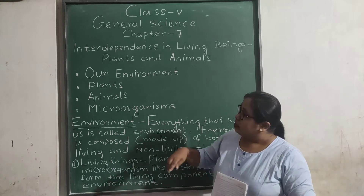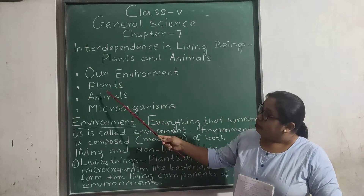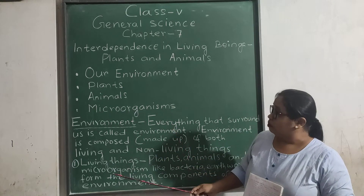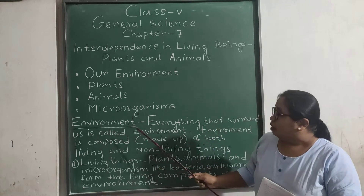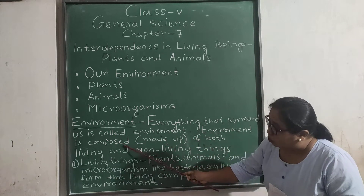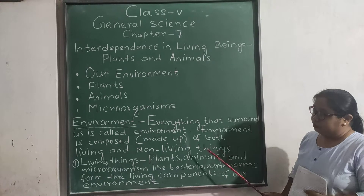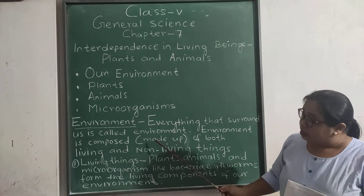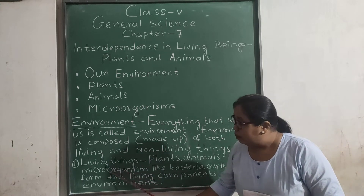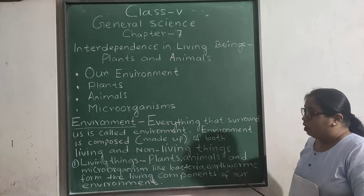First of all, let us discuss about our environment, plants, animals and micro-organisms. What is environment? Everything that surrounds us is called environment. Environment is composed of both living and non-living things. Living things include plants, animals and micro-organisms like bacteria or worms, which form the living components of our environment.